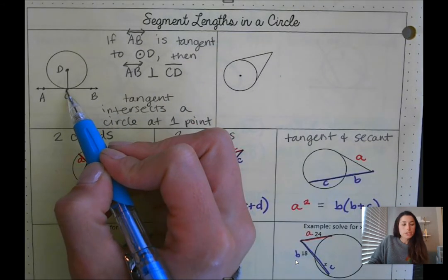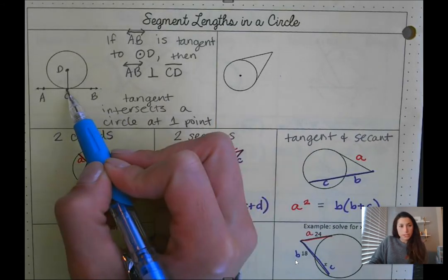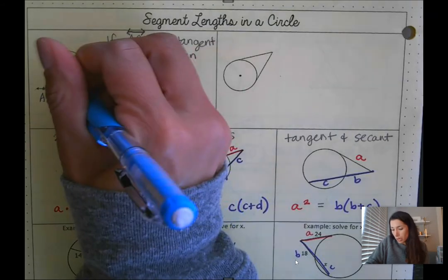So if this line here is tangent, we have our point of tangency here. What that means is we're creating a right angle.